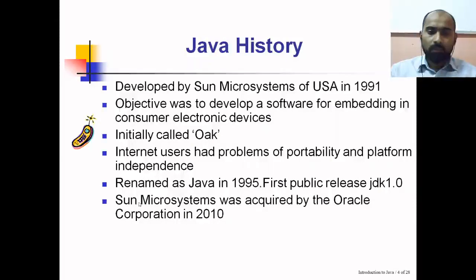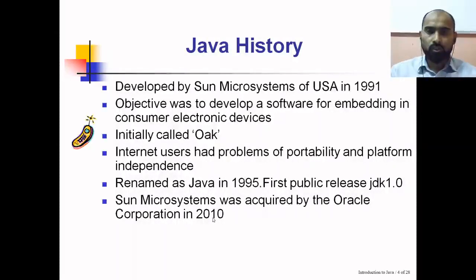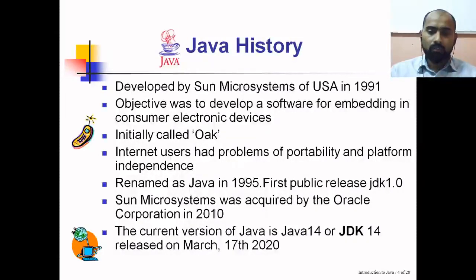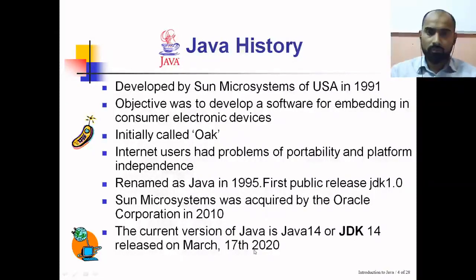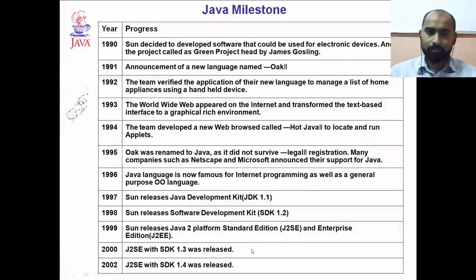Sun Microsystems was acquired by Oracle Corporation in 2010. So today Java is part of Oracle Corporation. The current version of Java, at the time of this recording, is Java 14 or JDK 14, released on March 17th, 2020, though newer versions may have since been released.